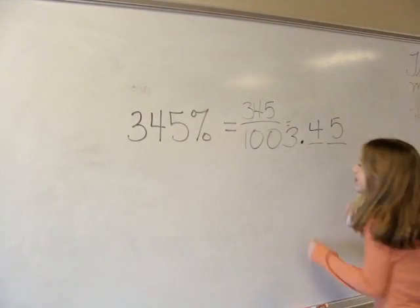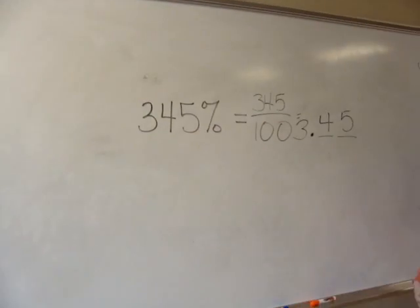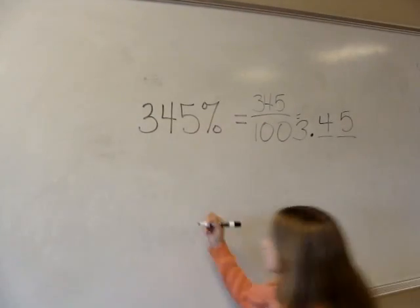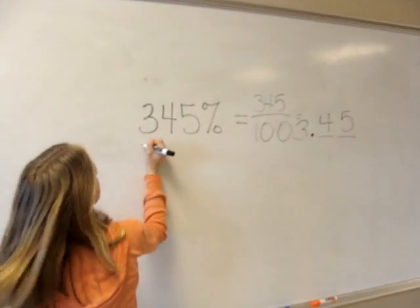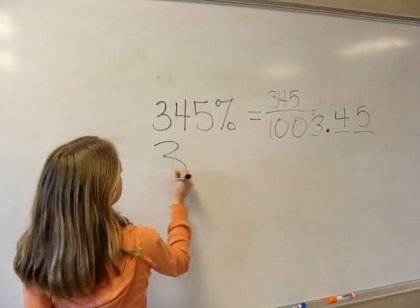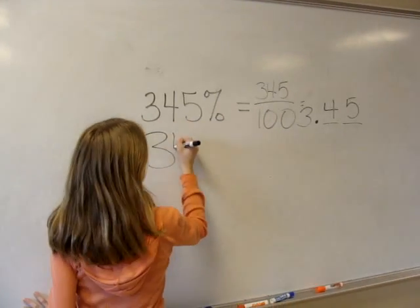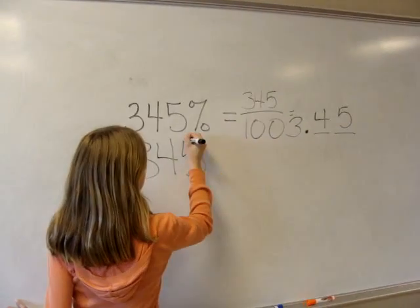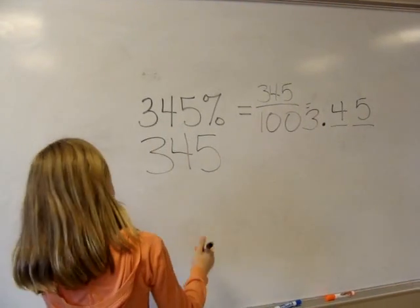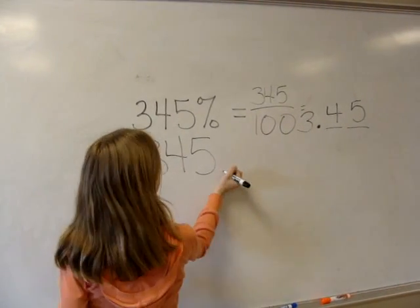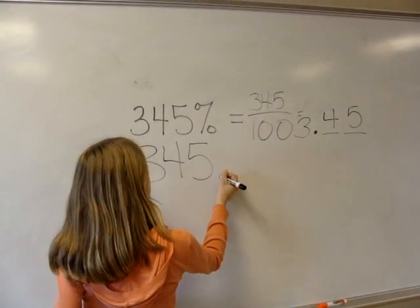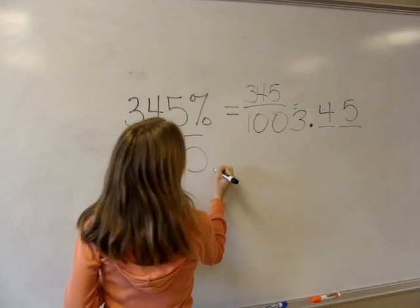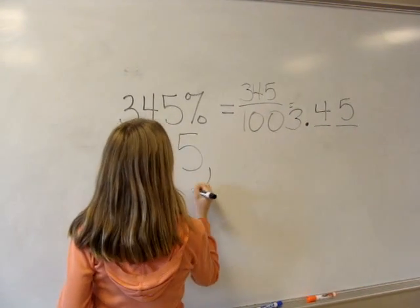We can also take a shortcut to do this — we'll change our percent directly from a percent to a decimal. First we're just going to write the number down without any decimal place or a percent sign. Your marker goes where the original place of the decimal was, and move it over two places to the left.